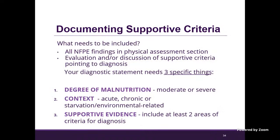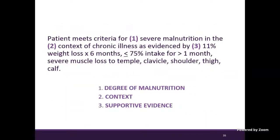For documenting supportive criteria, what needs to be included? We want all of our nutrition-focused physical exam findings included. We want the evaluation or discussion of supportive criteria that points to the diagnosis included in our documentation. And then we want a diagnostic statement that includes three specific things: the degree of malnutrition, the context — whether it's acute, chronic, or starvation/environmental related — and the supportive evidence, which needs to be at least two areas of criteria. An example diagnostic statement: 'Patient meets criteria for severe malnutrition in the context of chronic illness, as evidenced by' followed by three supporting criteria: weight loss, energy intake, and muscle loss.